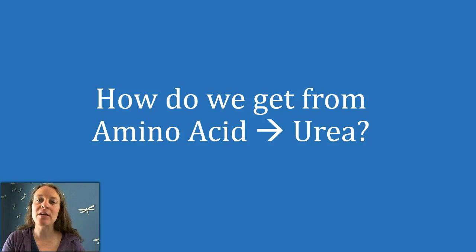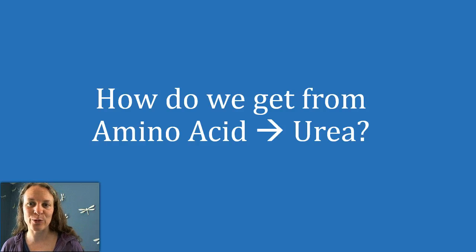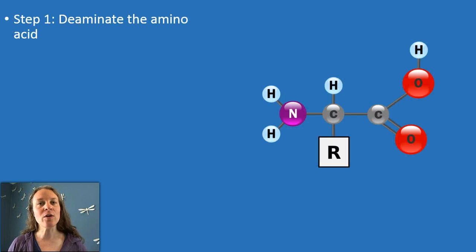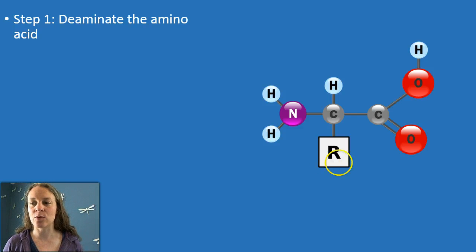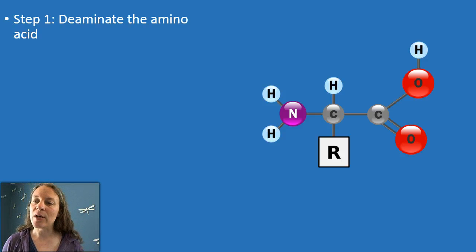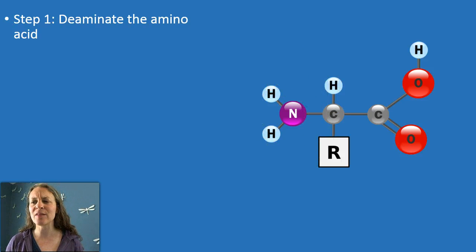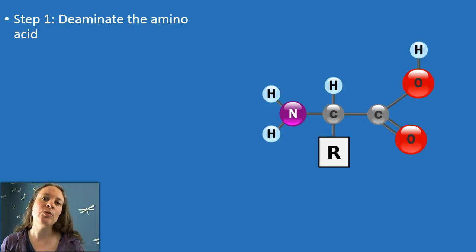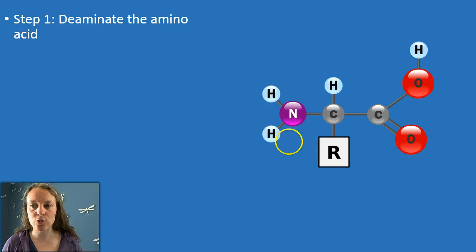So how do we go from amino acids to urea? This is largely happening in the liver, although we'll discuss other cells in a little bit. The first thing you want to do is deaminate the amino acid. We have a generic amino acid here — the R refers to the rest of the molecule, which is different depending on what amino acid it is. Enzymes essentially clip off the amine group and one other hydrogen. Everything else in this amino acid can be used to create carbohydrates or fats, but this nitrogen part is the problematic part, so we clip that off first.